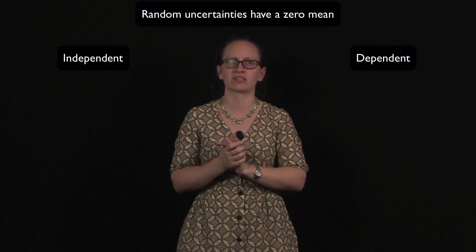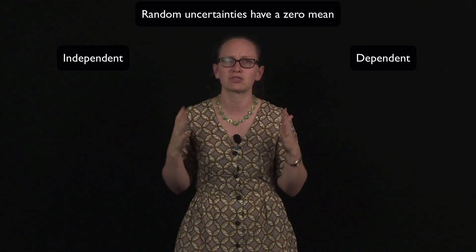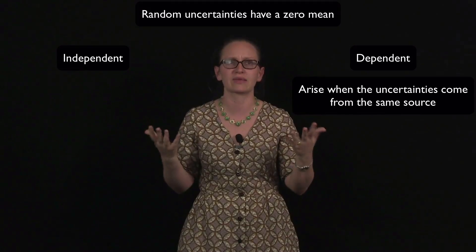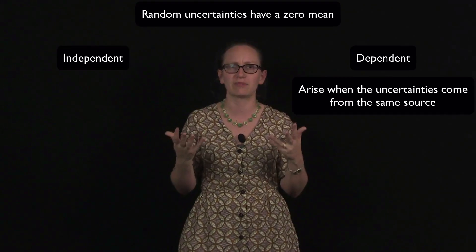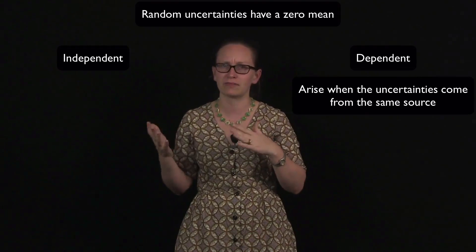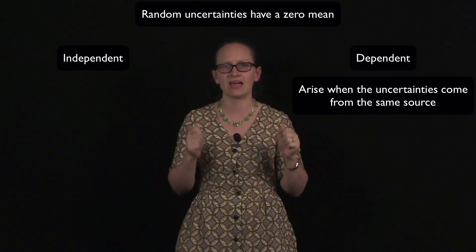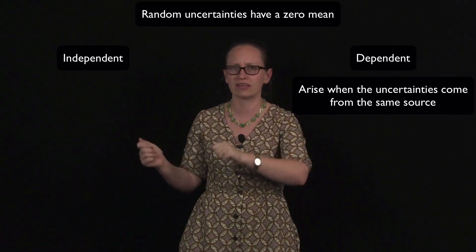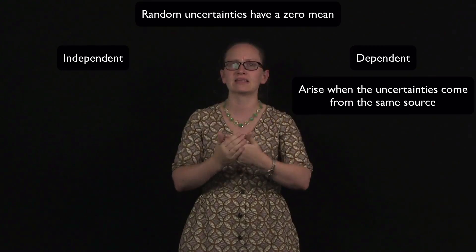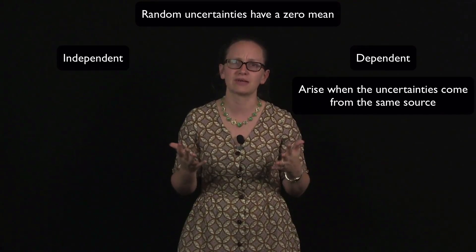Dependent random uncertainties are uncertainties that arise from the same source. A common reason this can happen is because the measurements have been made with the same or a very similar piece of equipment. So for example, if we used a tape measure to measure two different lengths, then the uncertainties in these lengths would be dependent, as the measurements had been made with the same piece of equipment.